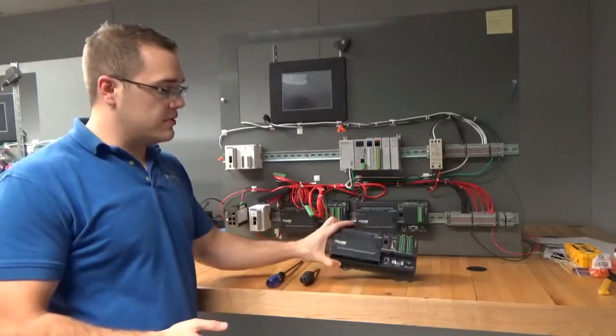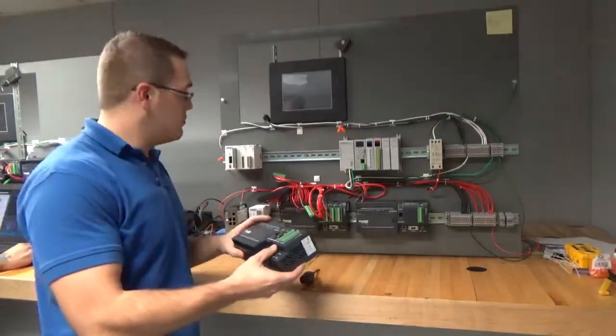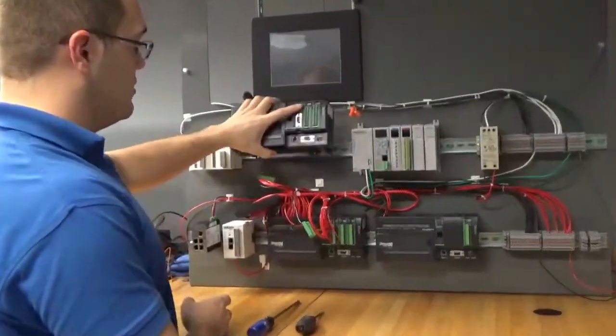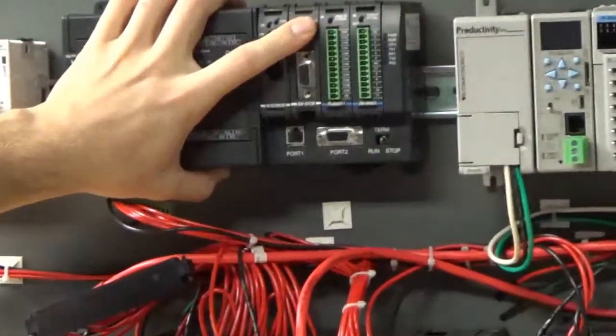Alright, once we have a replacement PLC, we're ready to install it back into our load bank or fuel system. Now at an angle, you're going to go right above the DIN rail, slide it down. It'll catch just like that.